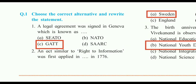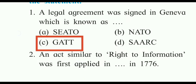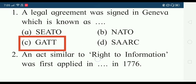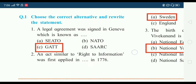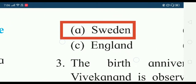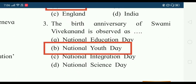We will start question number one: choose the correct alternative and rewrite the statement. First: a legal agreement was signed in Geneva which is known as dash — the answer is GATT. Second: an act similar to Right to Information was first applied in dash — in 1776, the answer is Sweden, option A.